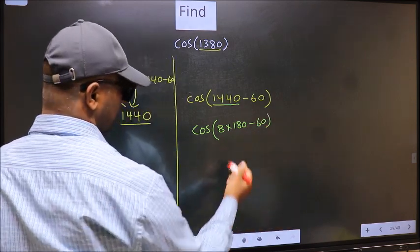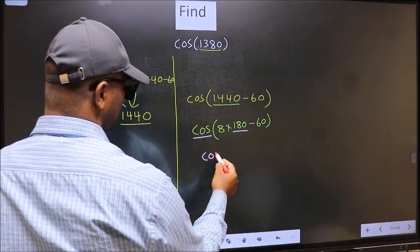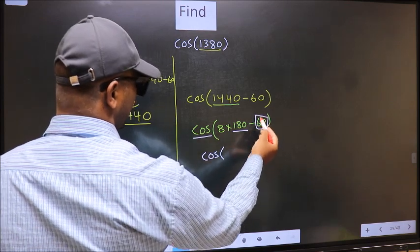Next, here we have 180. So cos is not going to change. It will remain cos and inside we get this angle 60.